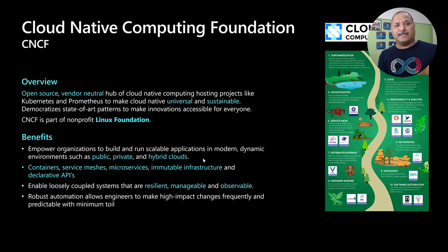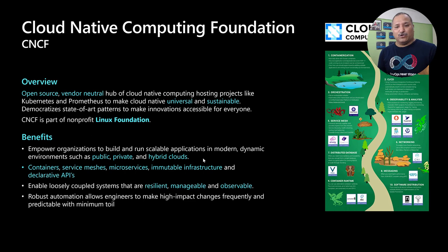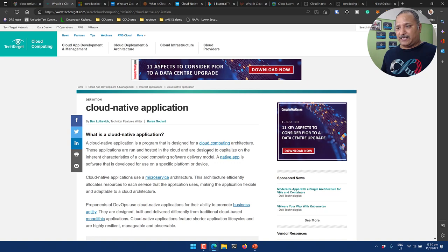Along with this, robust automation also plays a very key part in making changes which are quite frequent and predictable with minimum toil. We have tools nowadays that use things like GitOps; there are DevOps tools which enable very high-frequency releases as compared to the old days where we had to wait months and even years to make upgrades to our software. So with this, the Cloud Native Computing Foundation gives us a lot of tools and technologies. Let me switch to the browser and show some of the things that CNCF has to offer.